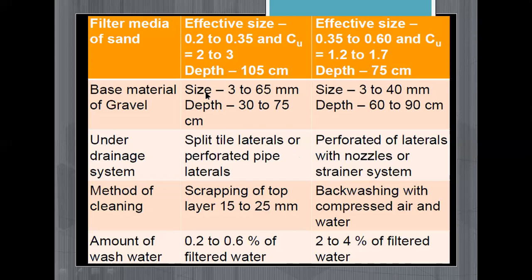Gravel is used as a base material in both cases. The size of the gravels in the slow sand filter is 3 to 65 mm and the depth of gravel is 30 to 75 cm. In the rapid sand filter the size of the gravels is 3 to 40 mm, and the depth of gravels is 60 cm to 90 cm.